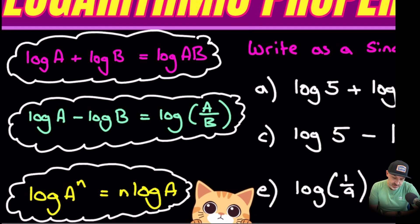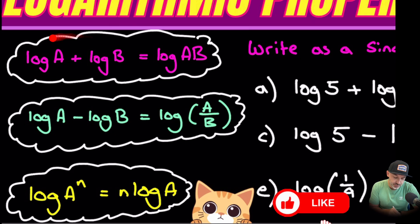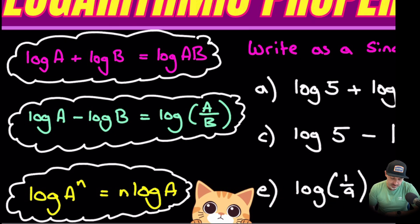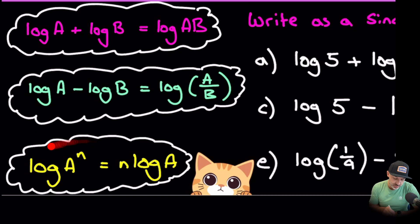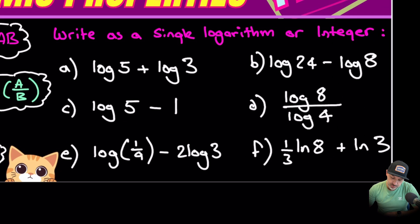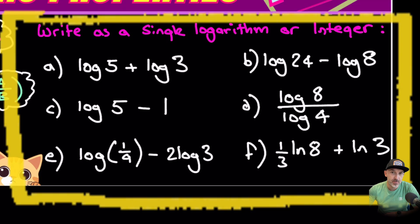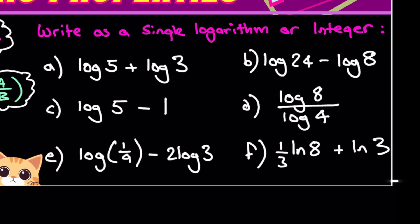On the left here we have some rules. The addition of two logs results in the product, subtraction of two logs results in a quotient, and we also have a power rule here. I'll go through a series of examples on the right hand side. I'm going to keep it quite simple for part one where we mainly stick to base 10 in the log.